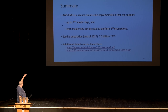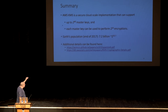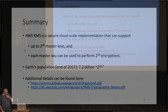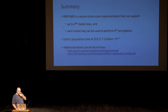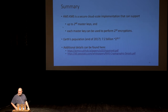In summary, we have a secure cloud-scale implementation of an encryption scheme that can support up to 2^{40} users or master keys — noting that a user can request more than a single master key. Each master key, each user can perform 2^{50} encryptions. The Earth's population in 2017 was about 7.2 billion people, which is something like 2^{33} users. So even if everyone on Earth were requesting a customer master key and doing 2^{50} encryptions, we are still safe and have this wonderful security margin with AES-GCM with the twist of the key derivation mode. Thank you very much.